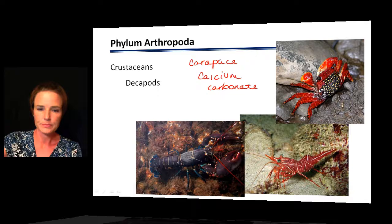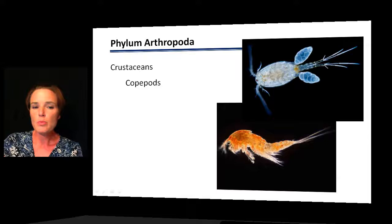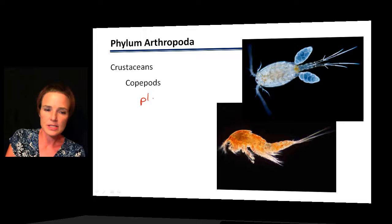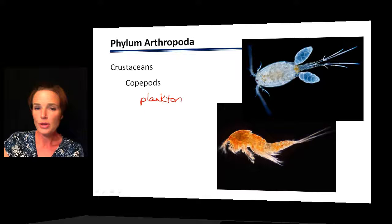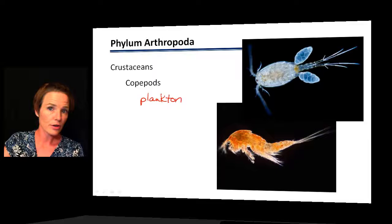The last crustacean group to mention is the copepods. These are very tiny plankton species and represent a major food source for filter-feeding animals. Many of the filter feeders we've discussed in this chapter are actually pulling copepods out of the water to feed on.